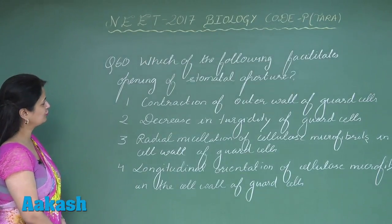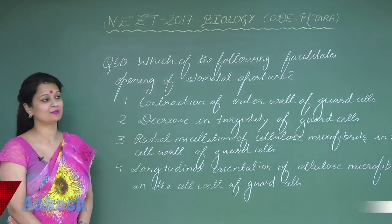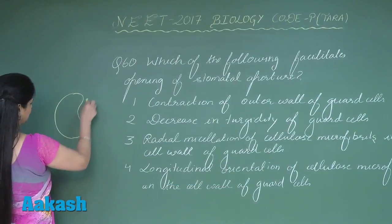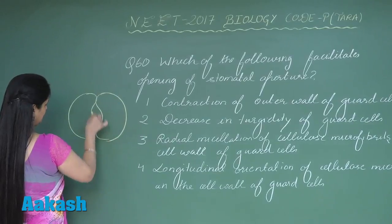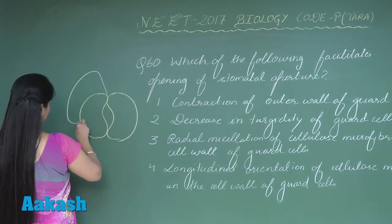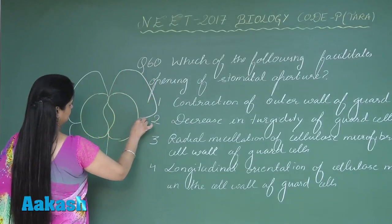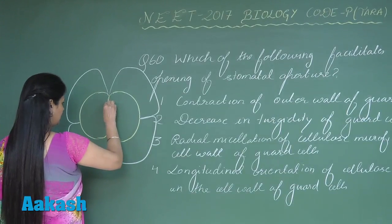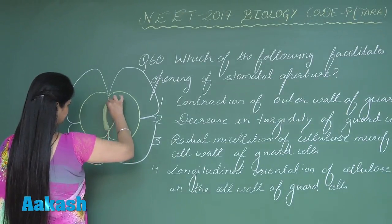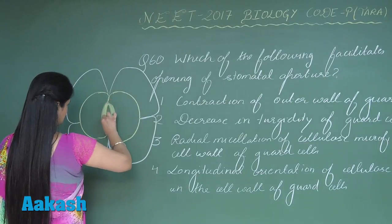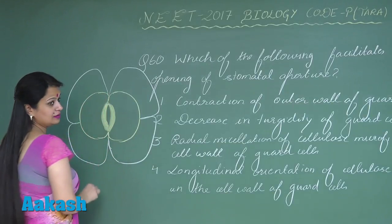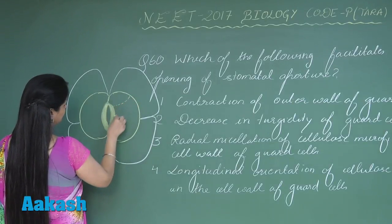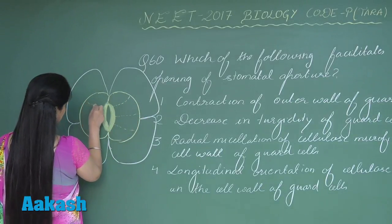Question number 60: we have to look for the option which facilitates the opening of the stomatal aperture. If we look at the guard cells present in dicots, they are surrounded by subsidiary cells. The inner wall of the guard cell is thick and the outer one is thin. The radial micellations are cellulose microfibrils arranged radially.